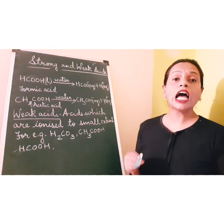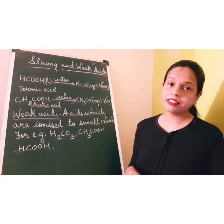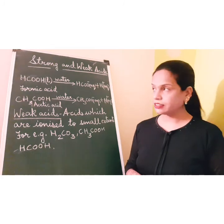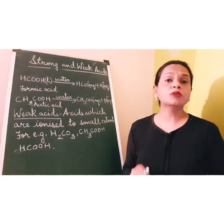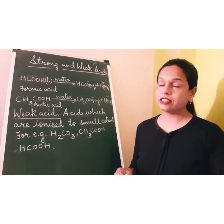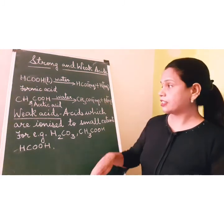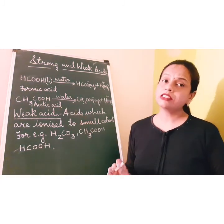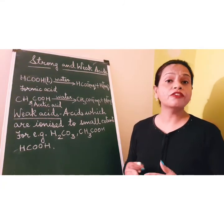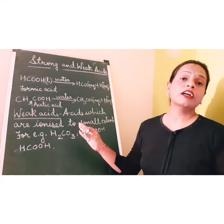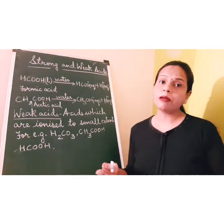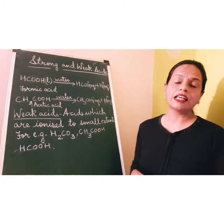Acids which are ionized to a small extent are called weak acids. Formic acid, which is present in the sting of bees and ants, is a weak acid. Acetic acid, present in vinegar, is another example of a weak acid. Carbonic acid is also an example of a weak acid.